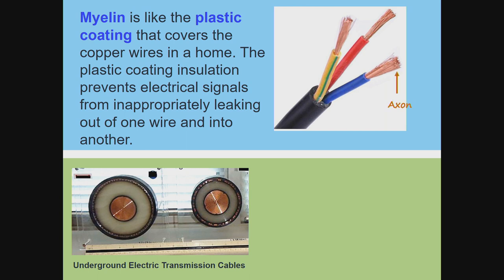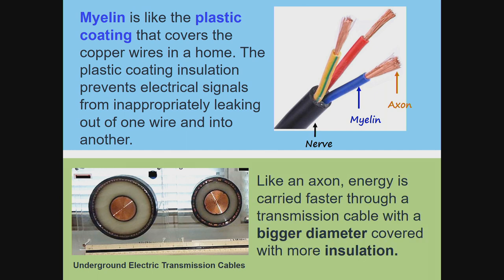Myelin is like the plastic coating that covers copper wires in a home. The plastic coating insulation prevents electrical signals from inappropriately leaking out of one wire and into another. Like an axon, energy is carried faster through a transmission cable with a bigger diameter covered with more insulation.